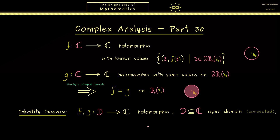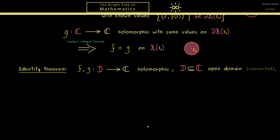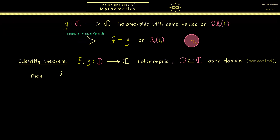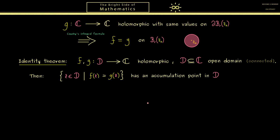Indeed this is important — the domain is not allowed to consist of two unconnected parts. So these are the two assumptions we need. We now look at the set where both functions f and g coincide — more precisely the set of all points z in the domain d where f(z) is equal to g(z). The only assumption we put in here is that it has at least one accumulation point in the domain d.